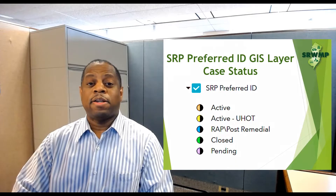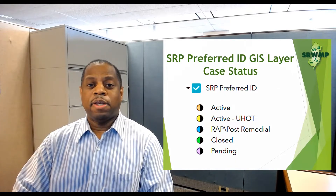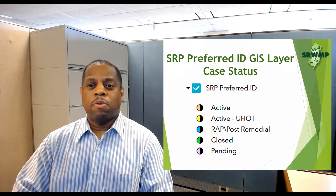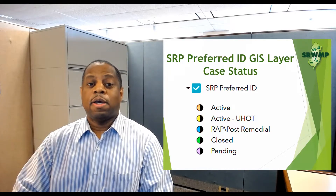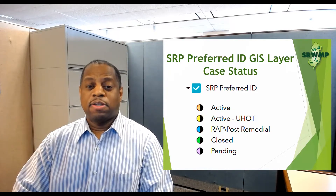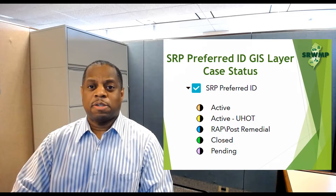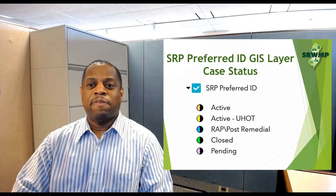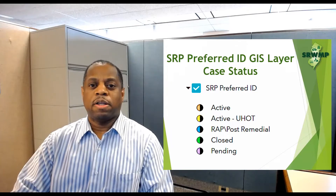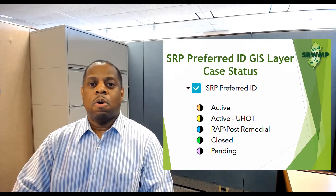This layer identifies active, pending, and closed site remediation cases with known or suspected contamination. It provides detailed information about each specific case, including its status and if a licensed site remediation professional, or LSRP, or an NJDEP program is handling the case.